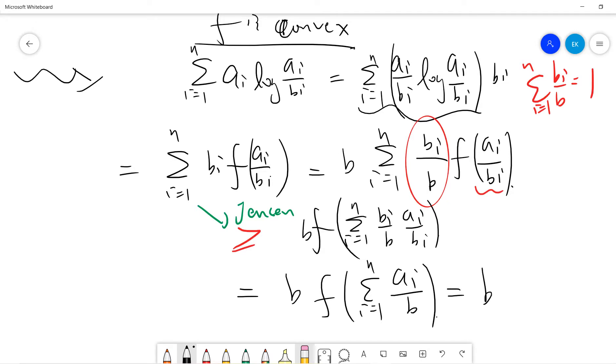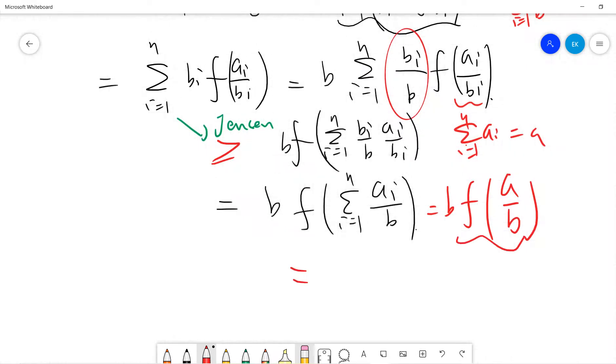Okay, so by definition, which is b times (a/b) log... Okay, so let me, okay, so you see, what is this, right? This is b f(a/b), right, because sum over ai from 1 to n, which is a. Okay, so finally writing down everything you get...